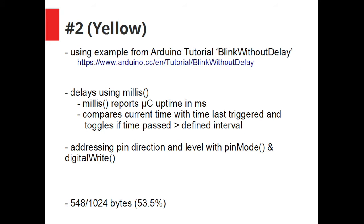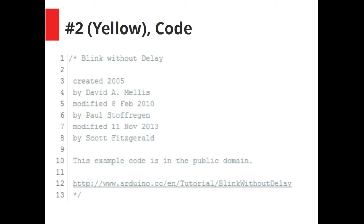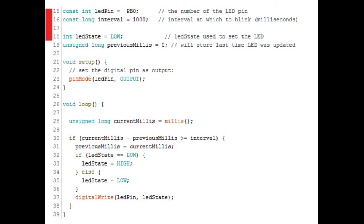The second sketch comes from the Arduino website and it's a tutorial about how to implement a Blink without using the delay function. So in this way you can have your sketch execute other code and still keep the LED blinking and this uses the millis function built into the Arduino which reports the uptime of the microcontroller in milliseconds. It compares the current time with the time it's last triggered and it toggles the LED if it is greater than defined interval.